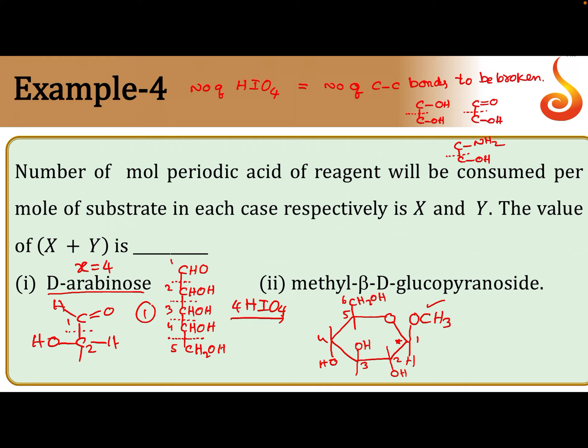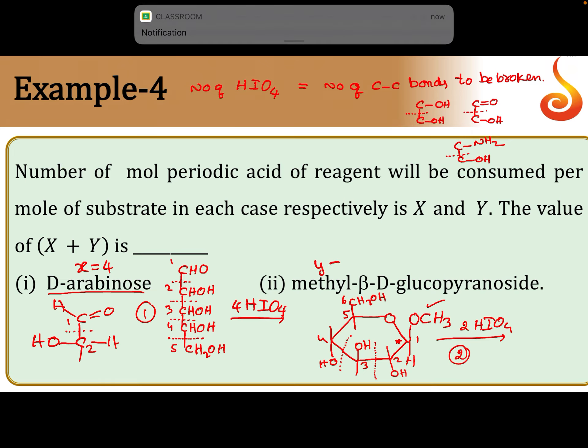Now check the C-C bonds to be broken. Observe carefully. The C2-C3 bond is eligible because on adjacent carbons there are OH groups. Similarly, C3-C4. So only two bonds. One mole of this can react with 2 moles of HIO4. So the Y value is 2.